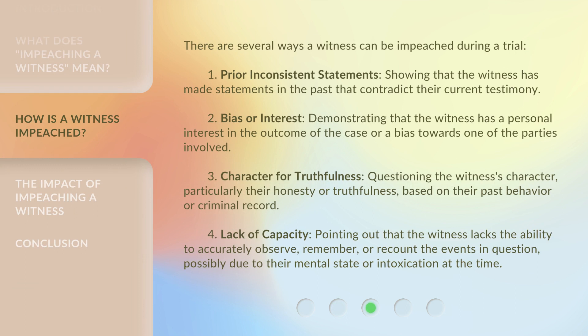There are several ways a witness can be impeached during a trial. 1. Prior Inconsistent Statements — showing that the witness has made statements in the past that contradict their current testimony. 2. Bias or Interest — demonstrating that the witness has a personal interest in the outcome of the case or a bias towards one of the parties involved. 3. Character for Truthfulness — questioning the witness's character, particularly their honesty or truthfulness, based on their past behavior or criminal record.